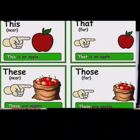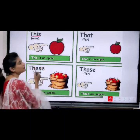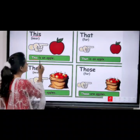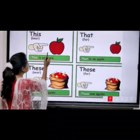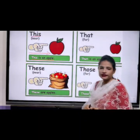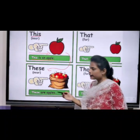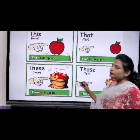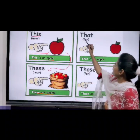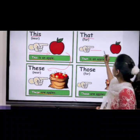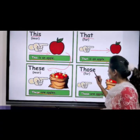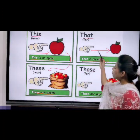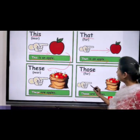Let us do a quick revision. 'This' is used when the object is near to us. When the object is close, we use 'this'. This is an apple — the apple is close to this hand. The plural form of 'this' is 'these'. Plural means more than one. Here, more than one apple — so 'These are apples.' When something is far from you, you will use 'that'. That is an apple — you can see the distance between the apple and the hand. And the plural form of 'that' is 'those'. Those are apples, and the distance is the same.